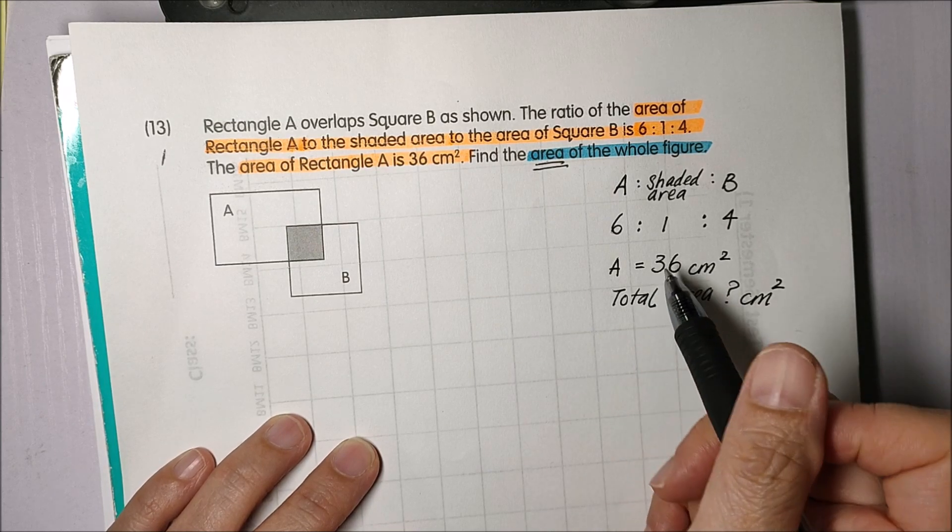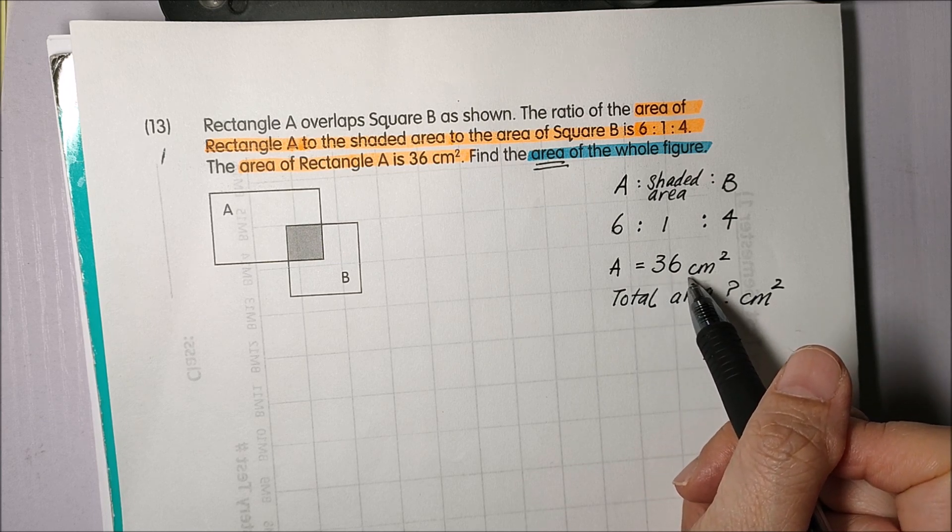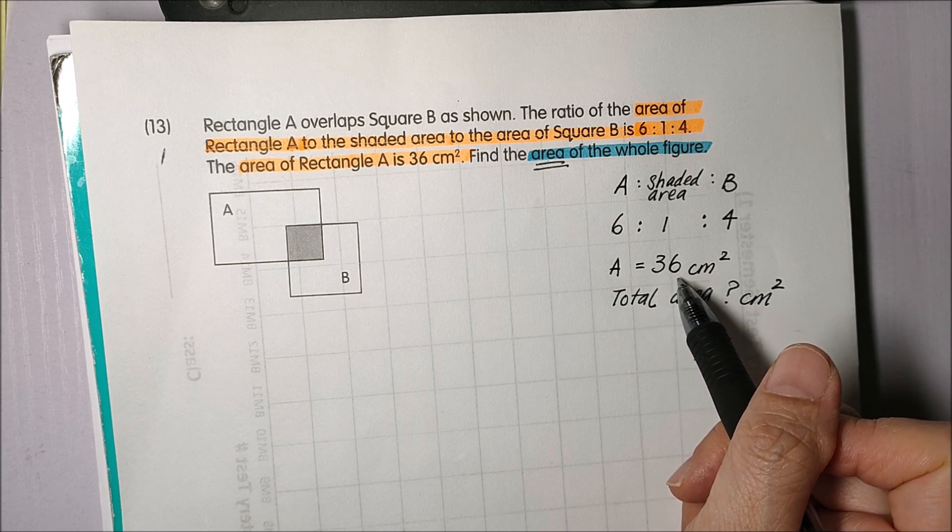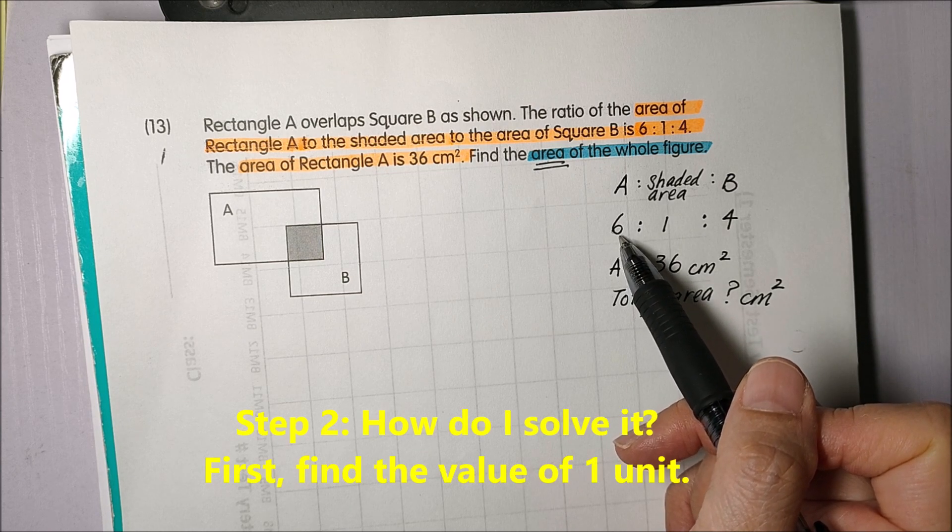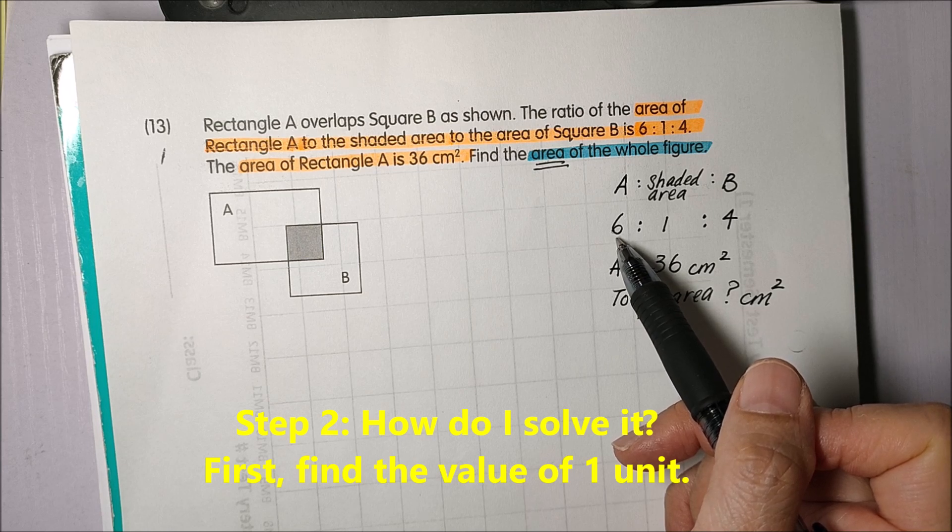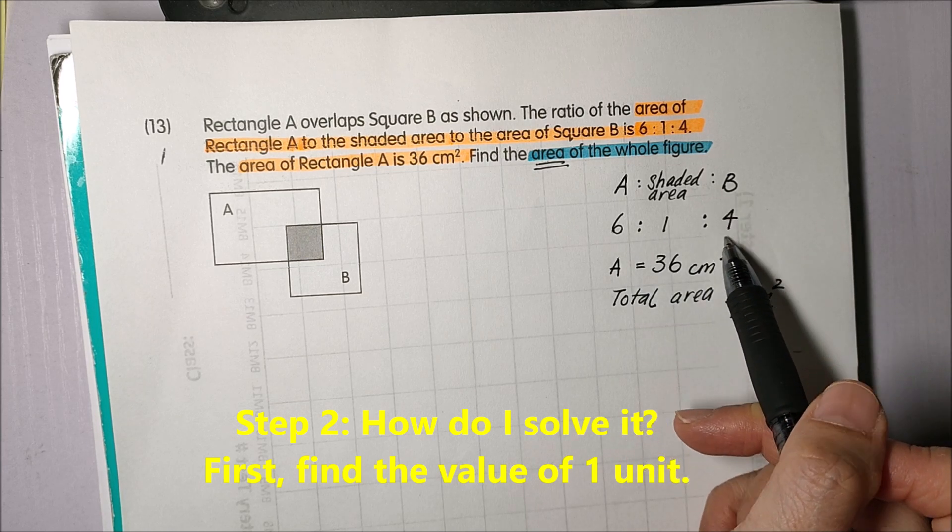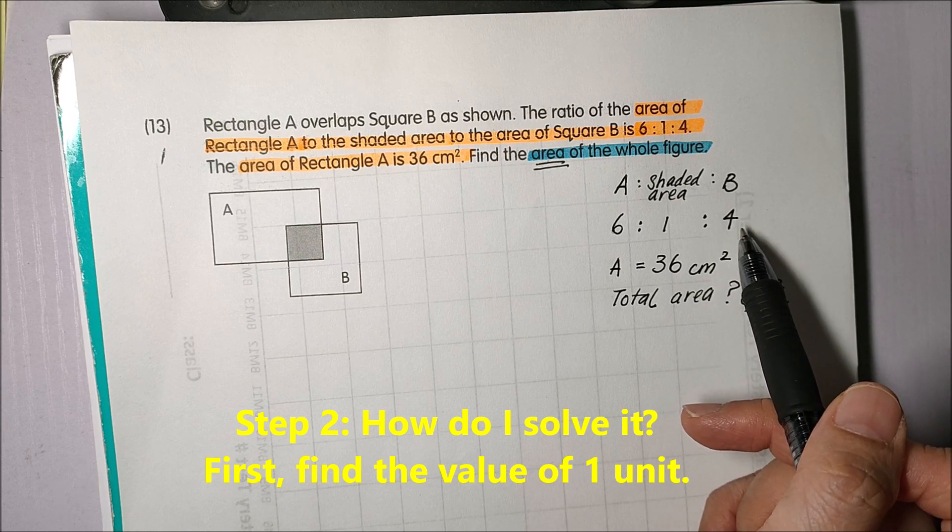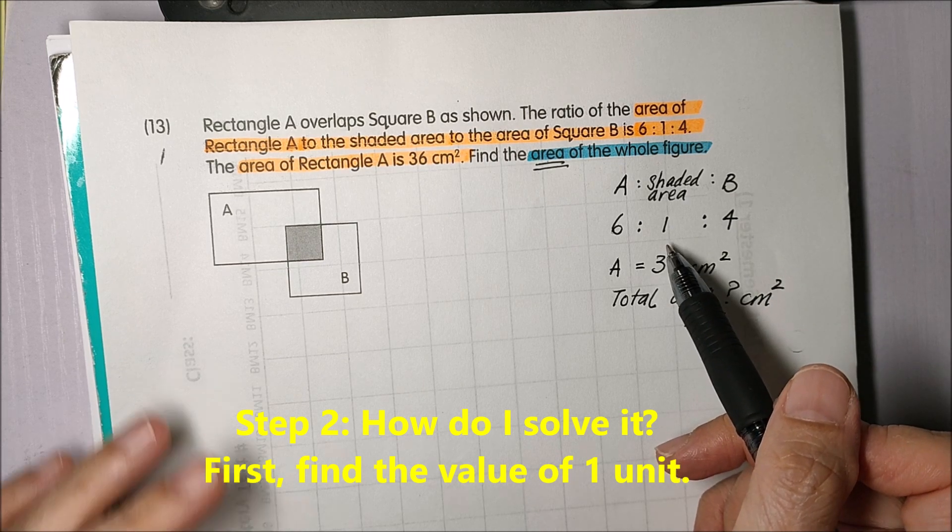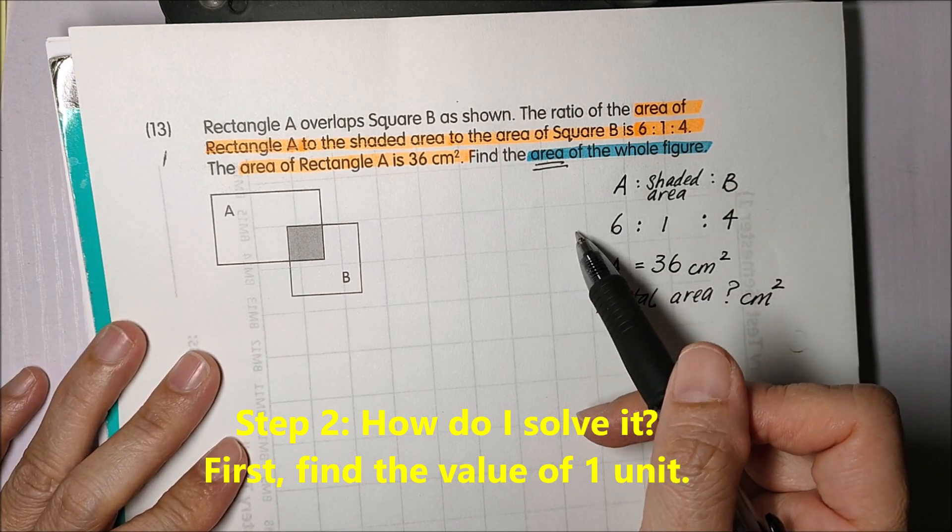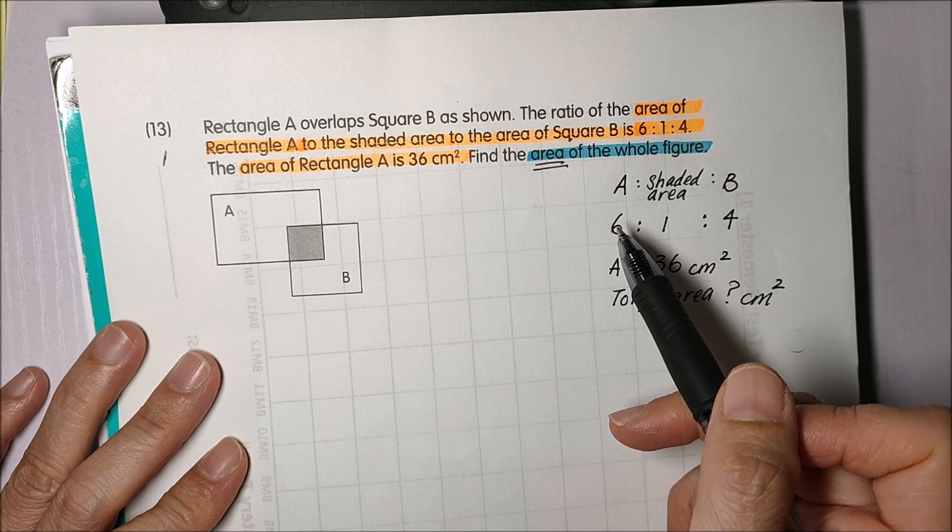Now, if I know the area of A which is 36 square centimeters and from the ratio is actually 6 units, so with that I'm able to find one unit. And with the value of one unit, I can find the area of B and I can work it out because then I'll have the area of all the three things. Area of rectangle A, area of square B, and the shaded area.